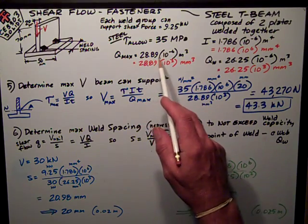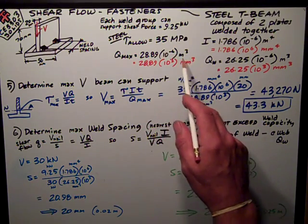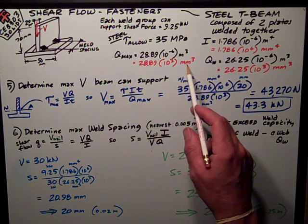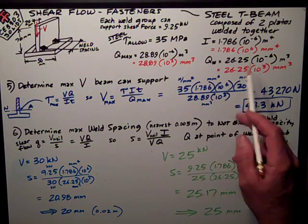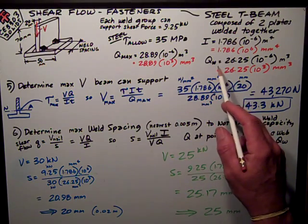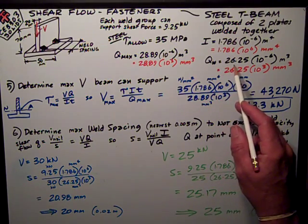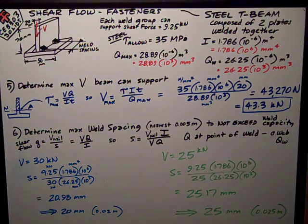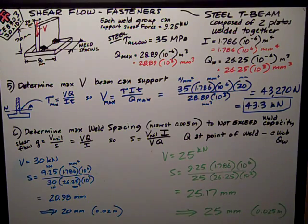Q_max is 28.89×10^-6 meters cubed, so I multiply by 10^9 to convert it into millimeters cubed. Q_w, Q at the web, is equal to 26.25×10^-6, so I converted it into millimeters, 26.25×10^3 millimeters cubed.